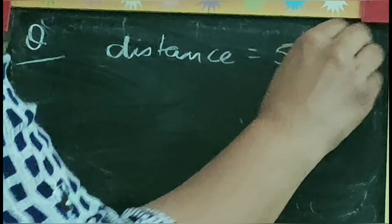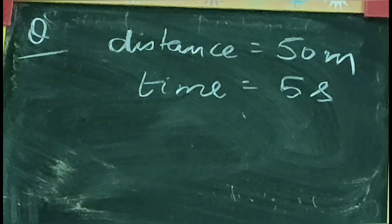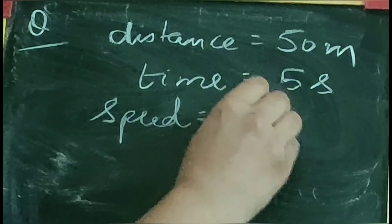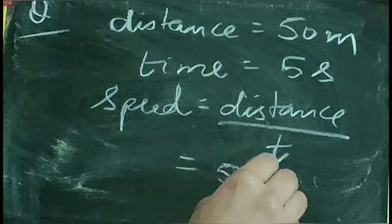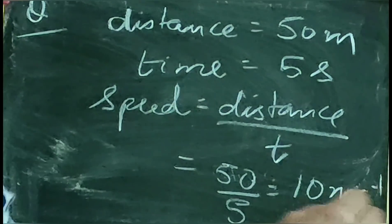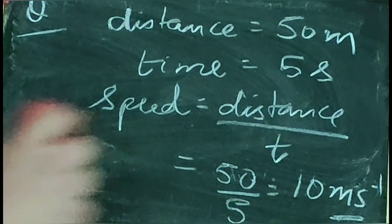Let us do a simple numerical to recapitulate the formula. Suppose an object covers a distance of 50 meters in 5 seconds, and you are asked to calculate the speed of the object. We simply put the values in the formula: speed is distance upon time. When we put the values, we get the answer as 10 meters per second. Don't forget the units.